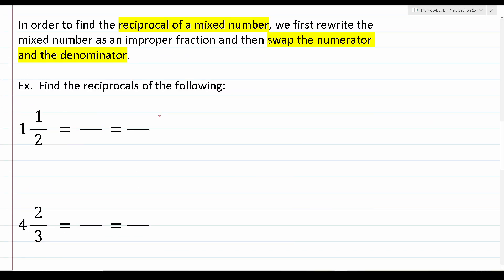Finally, let's talk about how to find the reciprocal of mixed numbers. In order to find the reciprocal of a mixed number, we first rewrite it as an improper fraction, and then swap the numerator and the denominator. Let's find the reciprocal of one and one half. We keep the denominator the same — so that's two — and do one times two, which is two, plus one, which gives us three. So one and one half written as an improper fraction is three over two. We then swap: the two comes up and the three goes down, giving two thirds. The reciprocal of one and one half is two thirds.